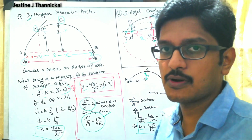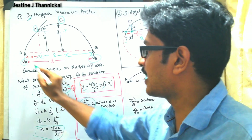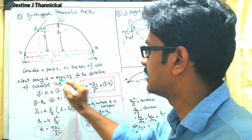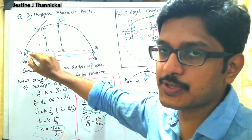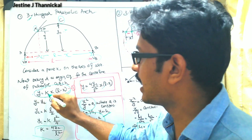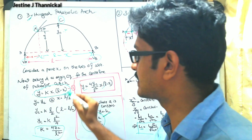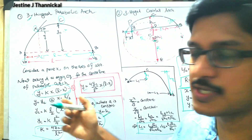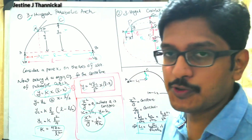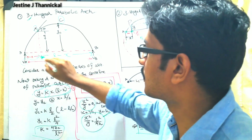We will consider point X on the axis of the arch, and some mathematical equations are necessary here. Taking A as our origin, the equation for the center line of the parabolic arch is y = k × x(l − x), where k is a constant. Our intention is to find the value of k. When x = l/2, y becomes yc.